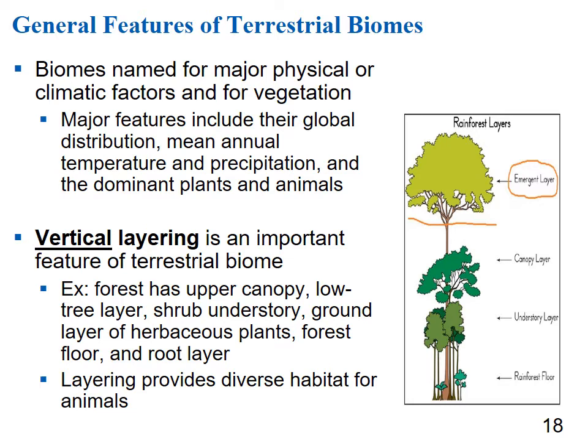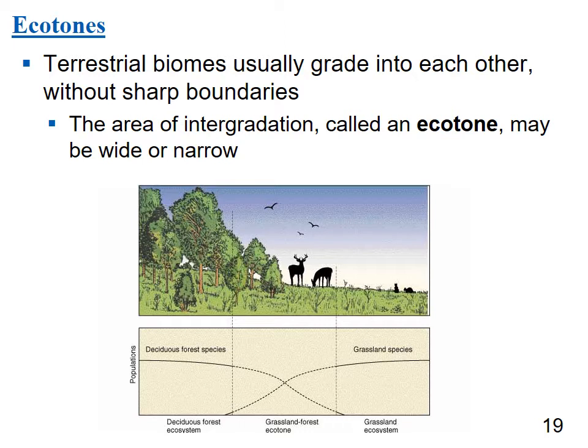An ecotone is where a terrestrial biome grades into another without sharp boundaries. For example, the edge of a forest where it meets a grassland doesn't have a sharp line — you have a more densely wooded area, then shrubby stuff, then grassy stuff. That area of intergradation is called an ecotone, which can be wide or narrow. In a forest-grassland ecotone, you would find both forest and grassland species in the middle area.